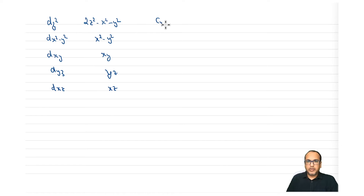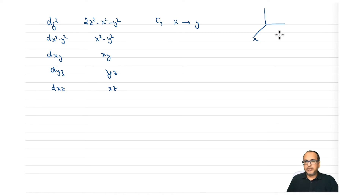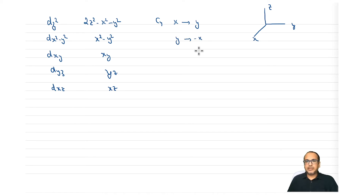Let's take the example of C4. We know that when we apply C4 to x we get y. Let's draw the coordinate system to make it easier to see. We have x, y, and z: x goes to y upon doing C4, y goes to -x, and z remains as z.